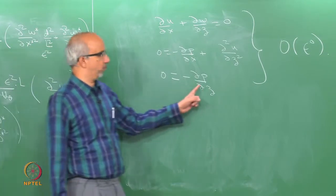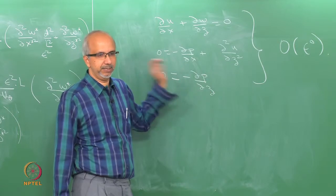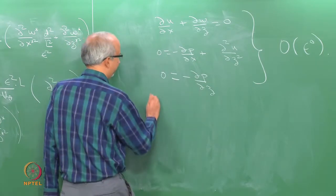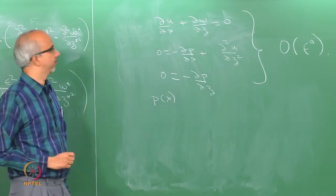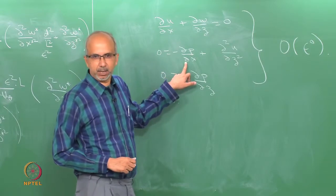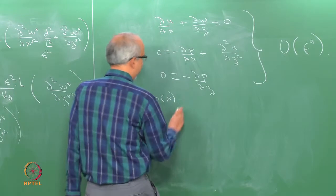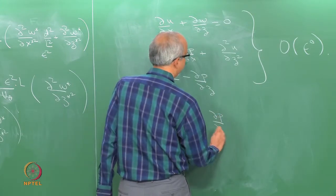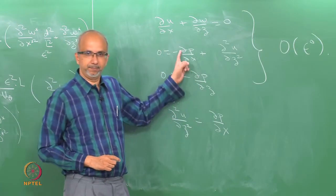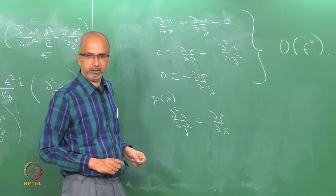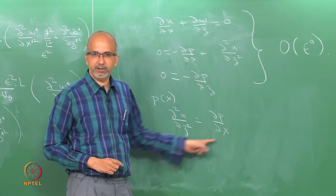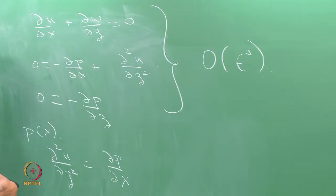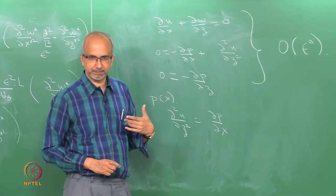∂p/∂z = 0 implies that pressure is a function only of x — it is too thin in the z direction, so we neglect variation in that direction. Since pressure is a function of x alone, I can integrate the x-momentum equation ∂²u/∂z² = dp/dx twice with respect to z. Since this is a partial derivative in z, the integration constants can be functions of x.